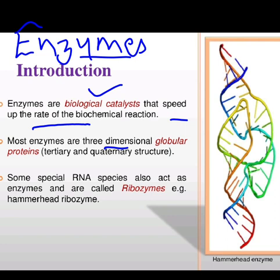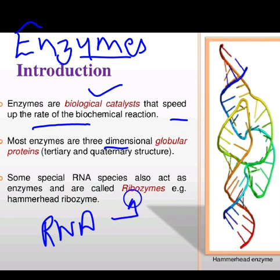Other than these proteinaceous enzymes, some RNAs also function as enzymes. Such types of RNA are known as ribozymes. These are those RNA species which function as enzymes. For example, the hammerhead ribozyme.